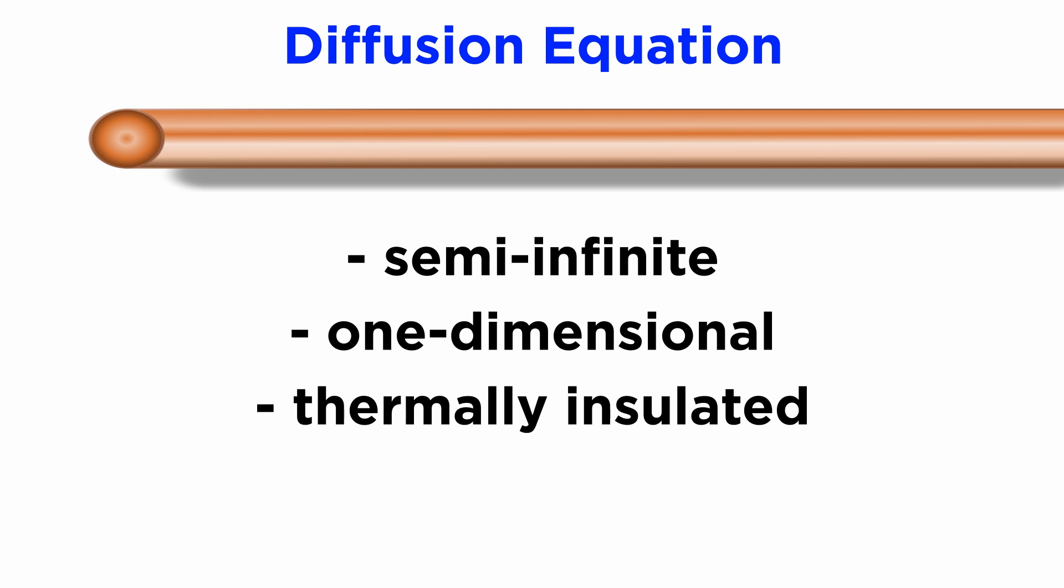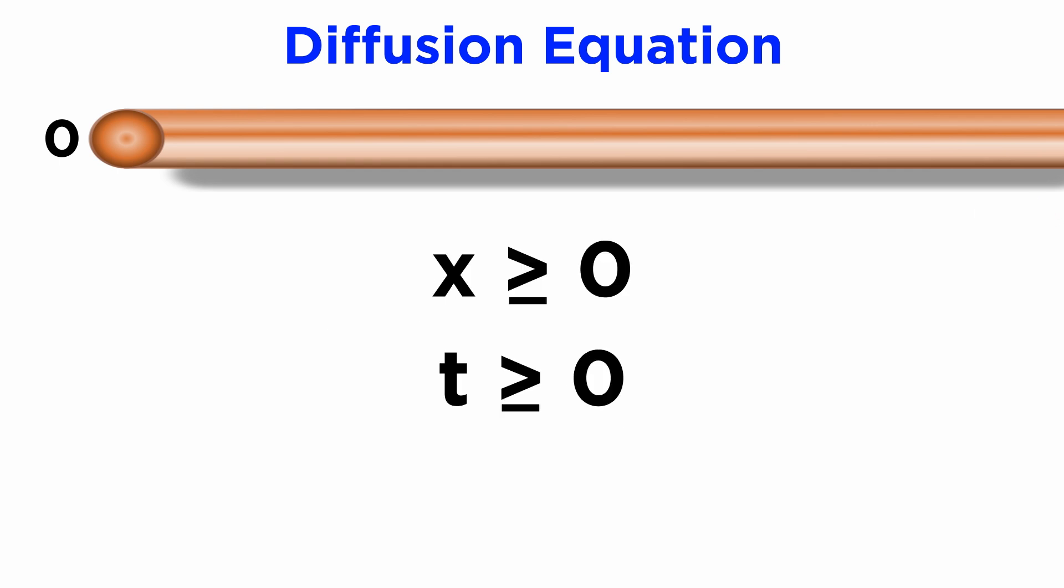First, let's say we have a semi-infinite one-dimensional thermally insulated metal rod, meaning that it starts at a position x equals zero and extends along only the positive x axis to infinity. In other words, the domain of our problem will be x greater than or equal to zero, and also time t greater than or equal to zero.